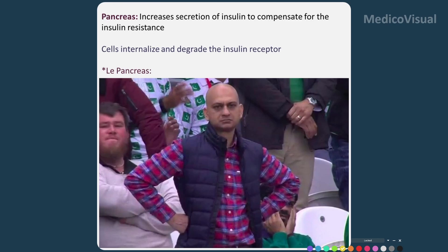cell apoptosis may start, and the beta cell number may reduce — just like in type 1 diabetes mellitus. But in type 2 diabetes mellitus, the death of beta cells is not immune-mediated generally —